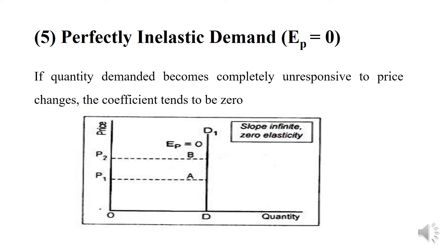Perfectly inelastic demand means if the quantity demanded becomes completely unresponsive to price changes, the coefficient tends to be zero. In this case, whatever the price — even if it is zero — the quantity demanded will remain fixed at a particular level. The demand curve becomes parallel to the vertical axis and demand is said to be completely inelastic.